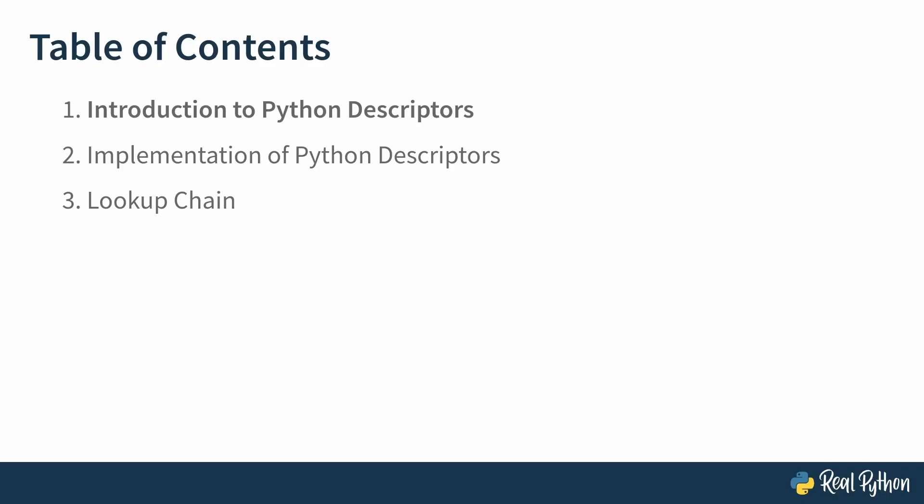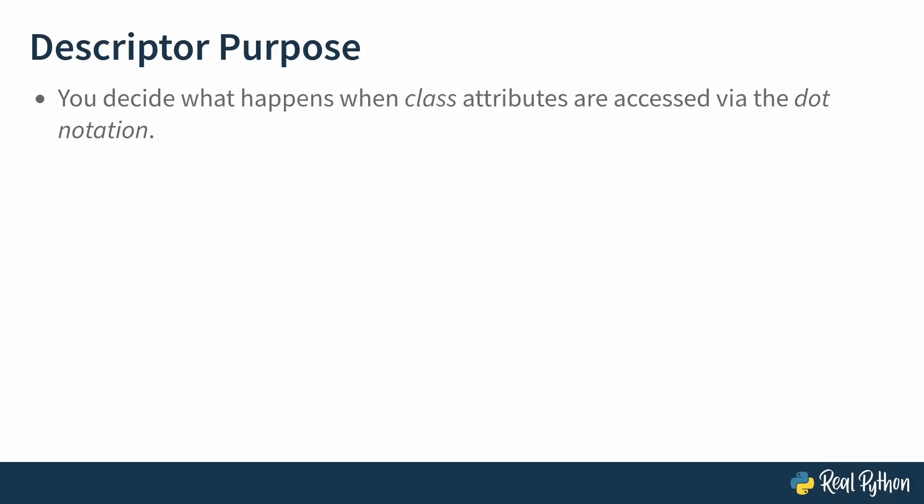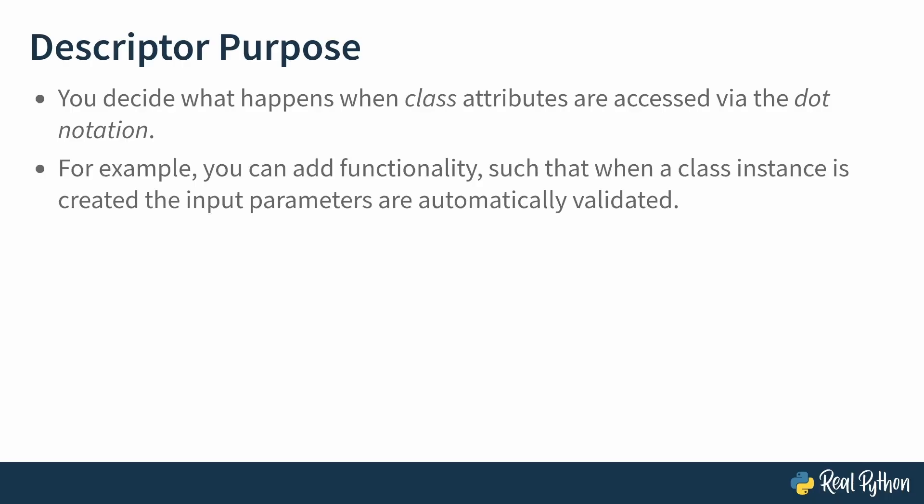In this lesson, you'll go through a brief introduction to descriptors. A good place to start is to understand what the point of them is. The descriptor purpose is to create your own magic. When it comes to descriptors, that means you decide what happens when class attributes are accessed using the dot notation. Later in this course, you'll see an example where you can add functionality such that when a class instance is created, the input parameters are automatically validated. And that, of course, is just an example — you can create whatever magic you like.